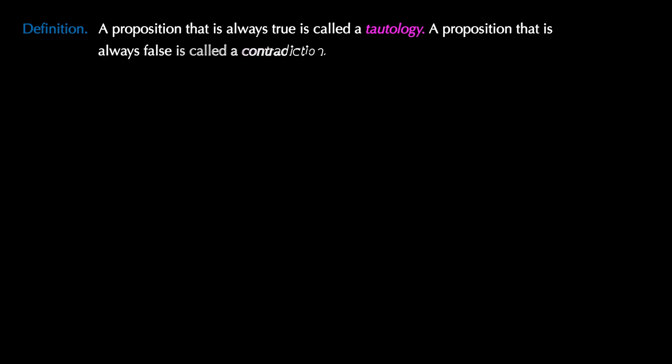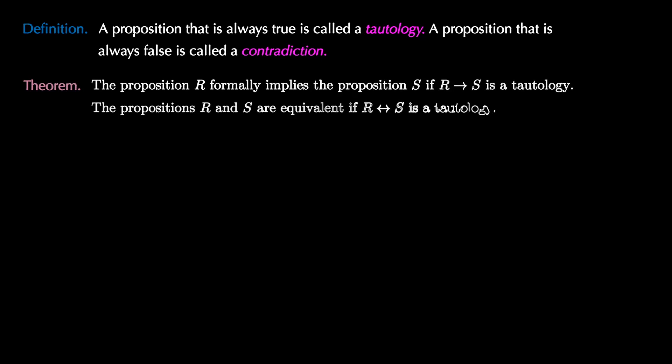Formal implication and equivalence are related to the conditional and biconditional connectives. Let's see how by defining a tautology. A proposition that is always true is called a tautology, and a proposition that's always false is called a contradiction. Then, the proposition R formally implies S if the proposition R implies S is a tautology. Similarly, propositions R and S are equivalent if the biconditional R if and only if S is a tautology.